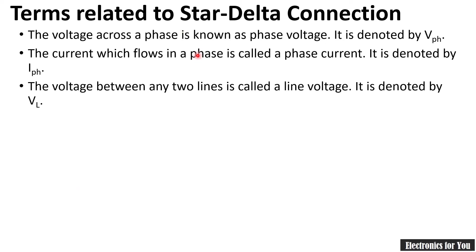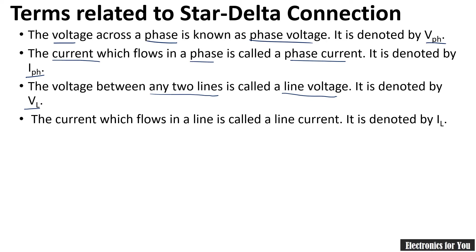First, note the key terms. The voltage across a phase is called phase voltage, denoted by Vph. The current flowing through a phase is called phase current, denoted by Iph. The voltage between any two lines is called line voltage, denoted by VL. The current flowing in a line is called line current, denoted by IL. These four terms — phase voltage, phase current, line voltage, and line current — are related to star and delta connections.